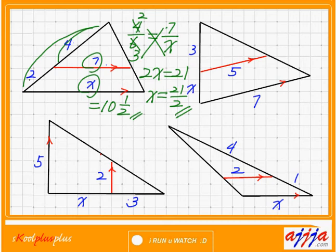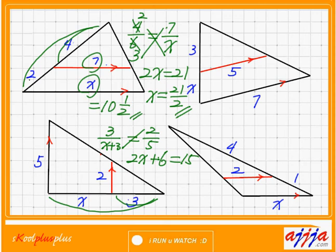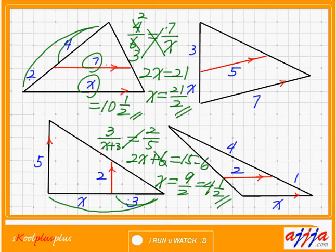Let's go a little faster. I go small triangle first: 3 to X plus 3 equals 2 to 5. Cross multiplication, X family first: 2 times X is 2X, plus 2 times 3 is 6. So 2X plus 6 equals 3 times 5, which is 15. Move plus 6 to the right-hand side — minus 6 — which is 9. Left-hand side is 2X, right-hand side is 9. X equals 9 divided by 2, which is 4.5 or 4 and a half.